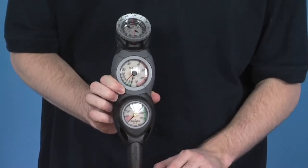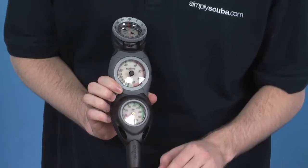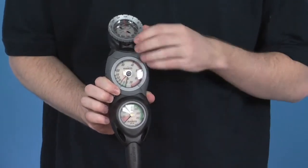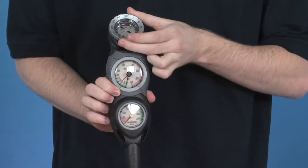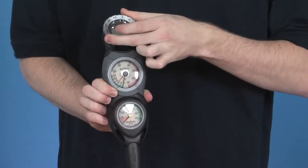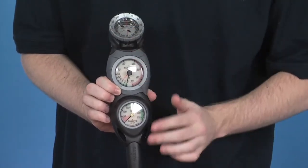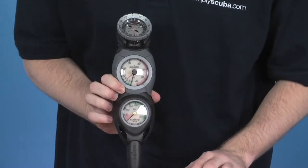It has a large depth gauge to 70 meters, a pressure gauge to 350 bar, and an SK7 compass at the very top. All three are connected and in line, hence the name of the product.